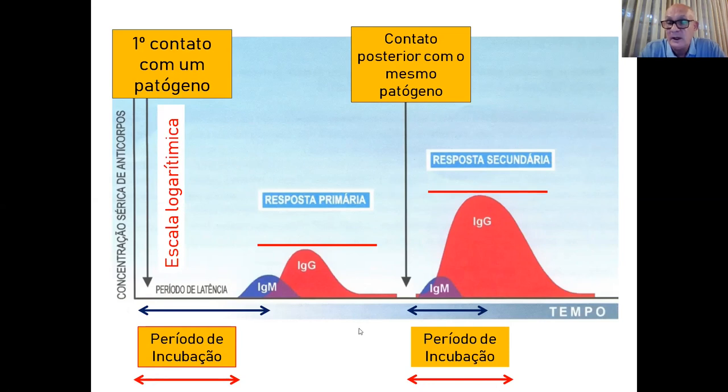É isso que impede a gente de ficar doente. As vacinas tentam induzir essa resposta primária e deixar bastantes células T e B de memória, para que, se entrarmos em contato com o patógeno na natureza, produzamos anticorpos num período mais rápido do que o período de incubação. Assim terminamos esse episódio sobre resposta imune e memória. No próximo episódio, falarei das principais diferenças entre vacinas atenuadas e vacinas inativadas. Obrigado pela atenção e até a próxima.